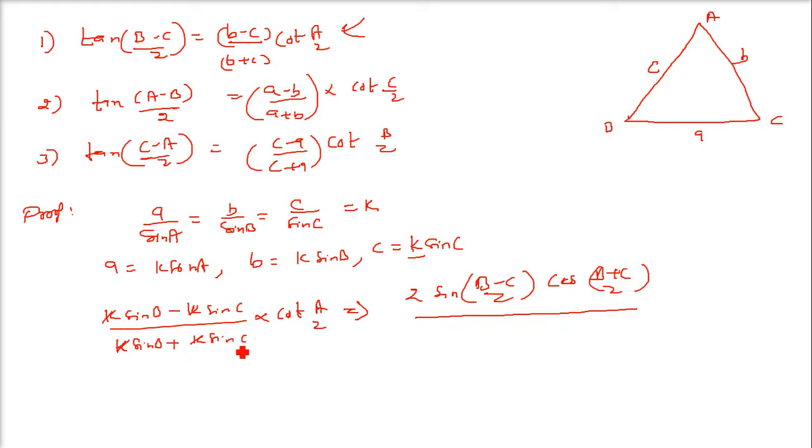Here also you have sin b plus sin c. What is the formula? 2 sin of (b plus c) by 2 cos of (b minus c) by 2.